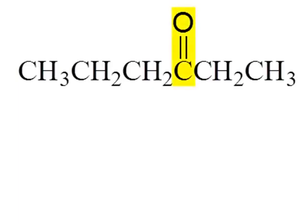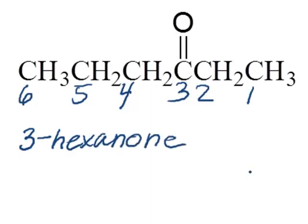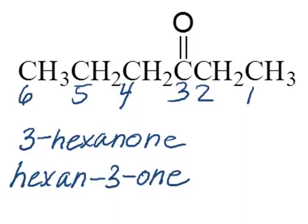With ketone molecules, unlike with aldehydes, you can choose where to start numbering the backbone — and you want the carbonyl carbon at the lowest position possible. For example, numbering from one end places the carbonyl on carbon four, but numbering from the other end places it on carbon three, so we number from the right. The name can be written as 3-hexanone, or alternatively with the number placed directly before the ONE suffix. Either form is acceptable.